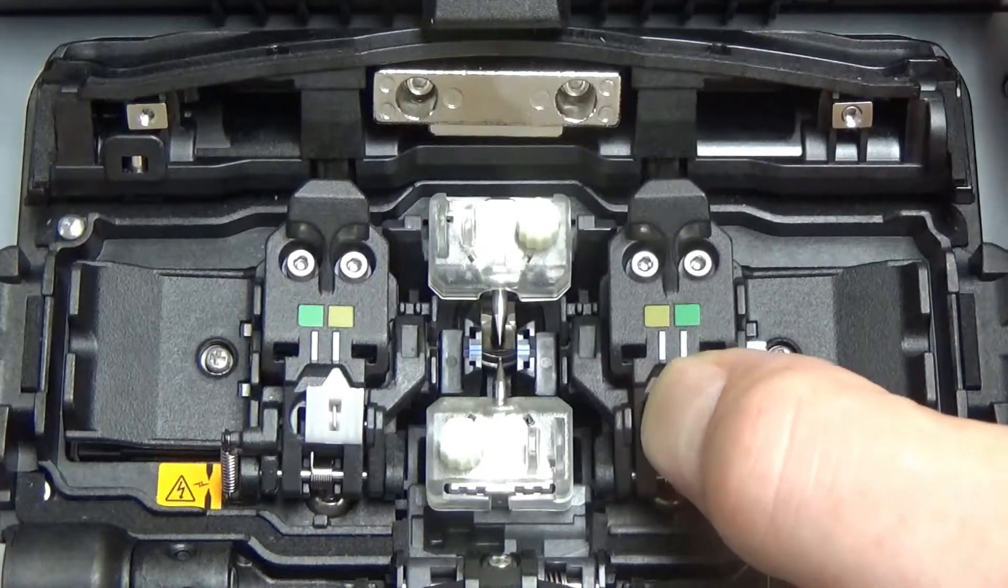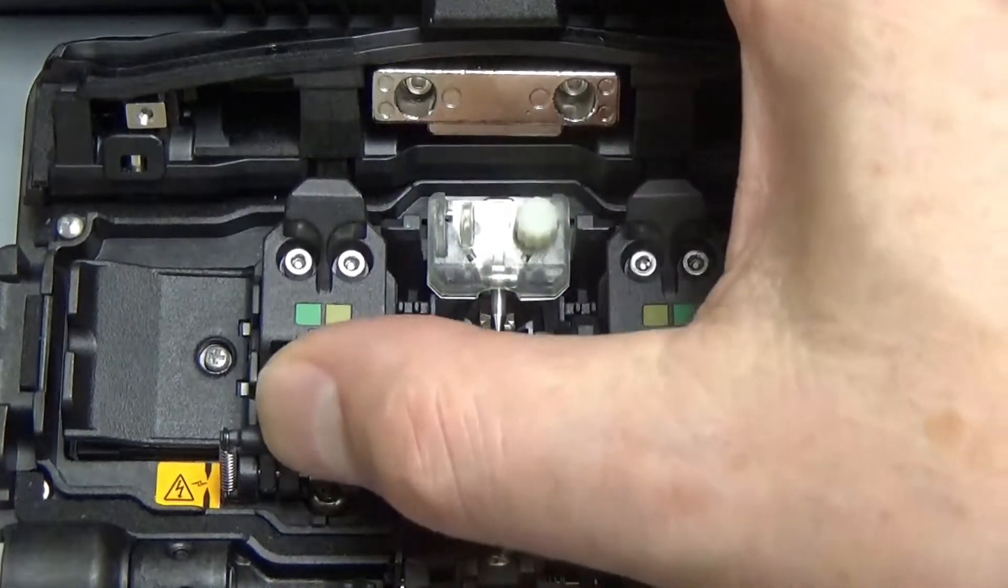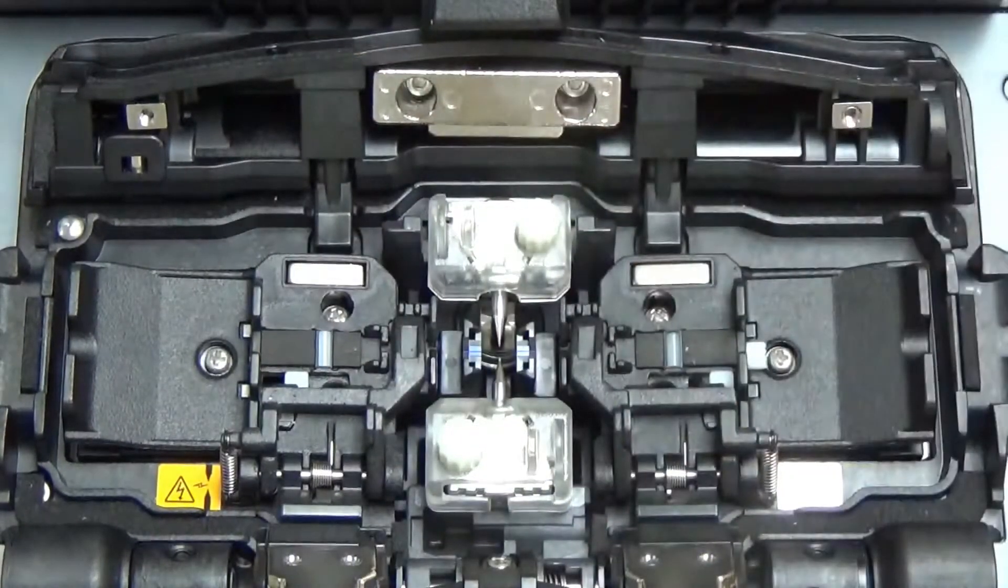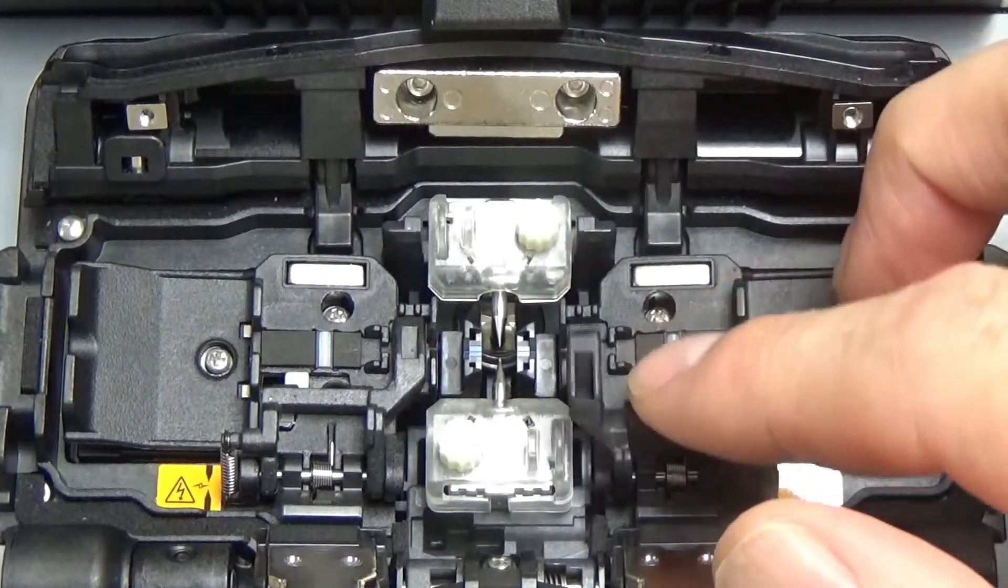You'll notice on the top of each clamp a set of switches which release or lock the fiber retention clamps. In my case I'm going to unlock them so the fibers stay in place after a splice.